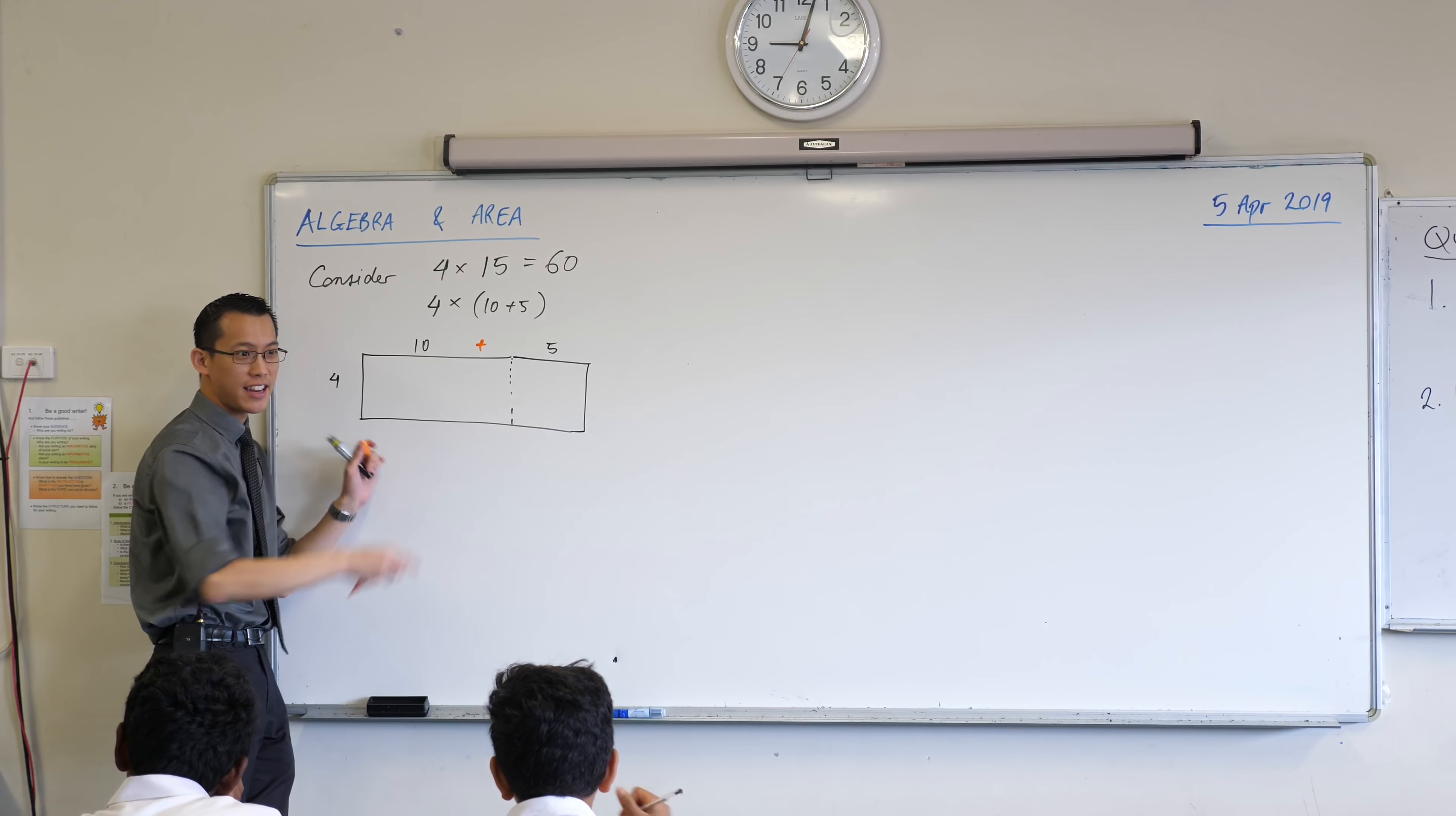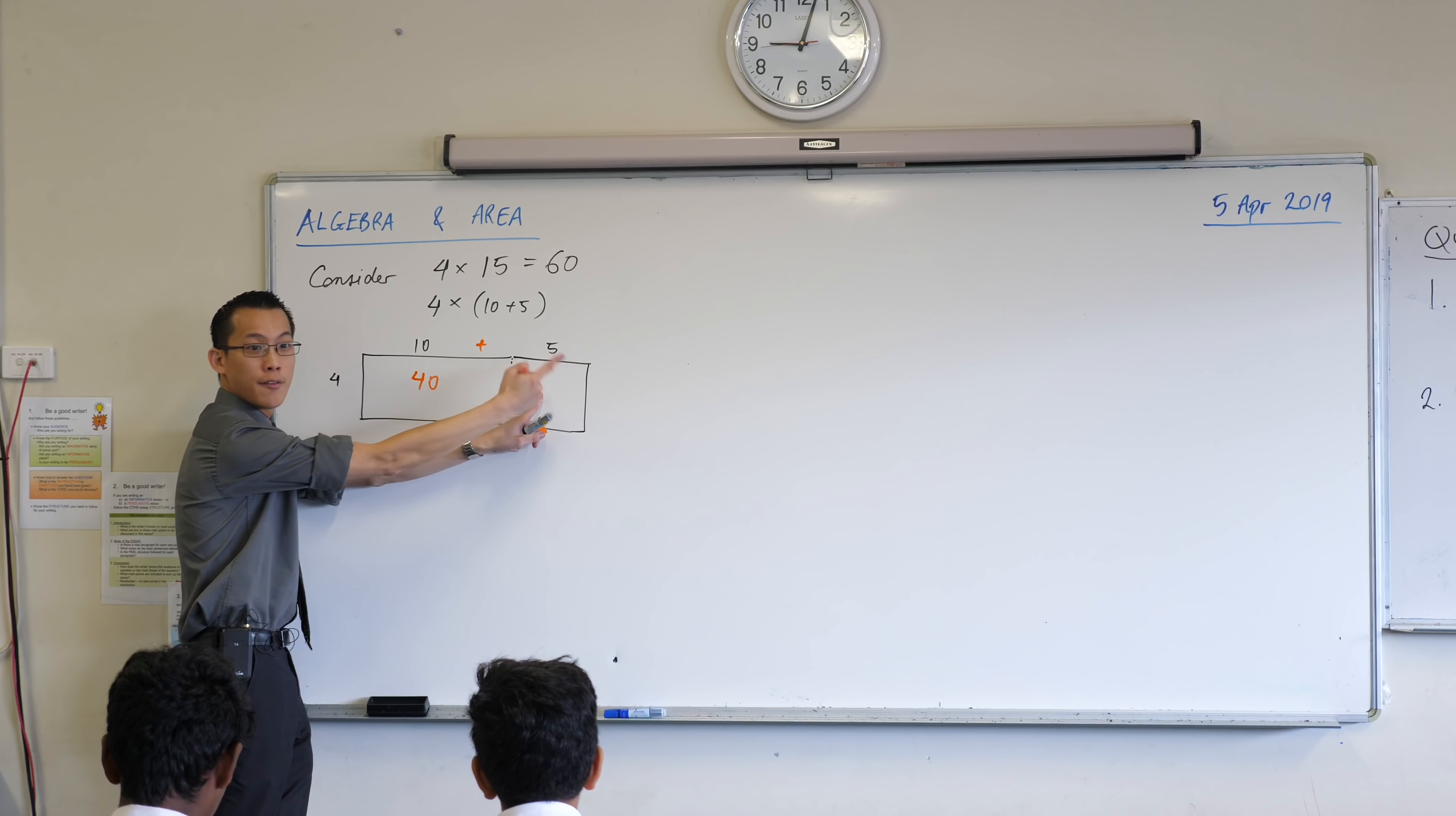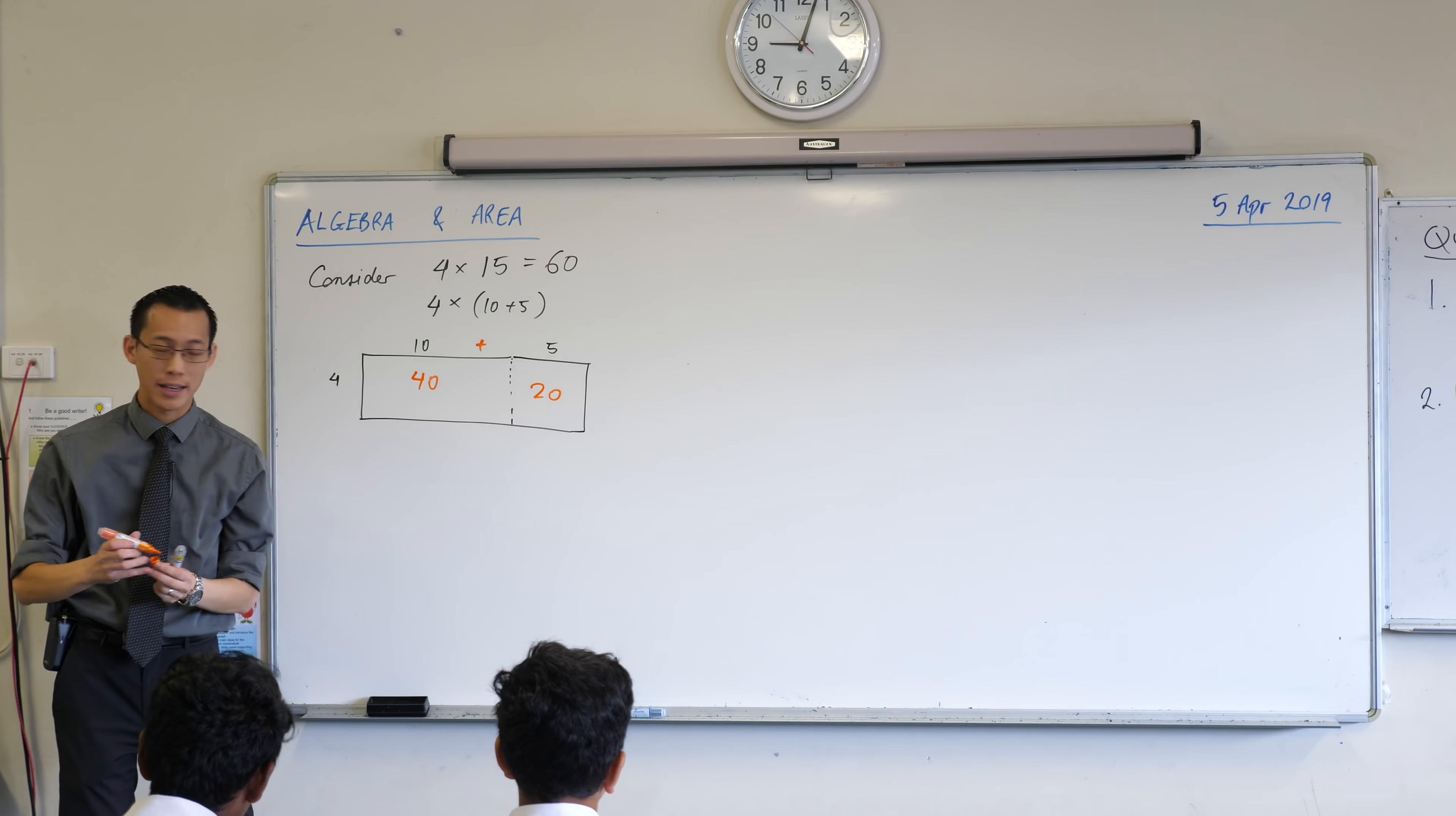4 times 10. It's just length times breadth, isn't it? 40. And then you've got this other smaller rectangle over here. It's not 4 times 10. It's 4 times 5, which gives you an answer of 20, which agrees with what we found before, right? The total area, 40 plus 20 gives you that 60.